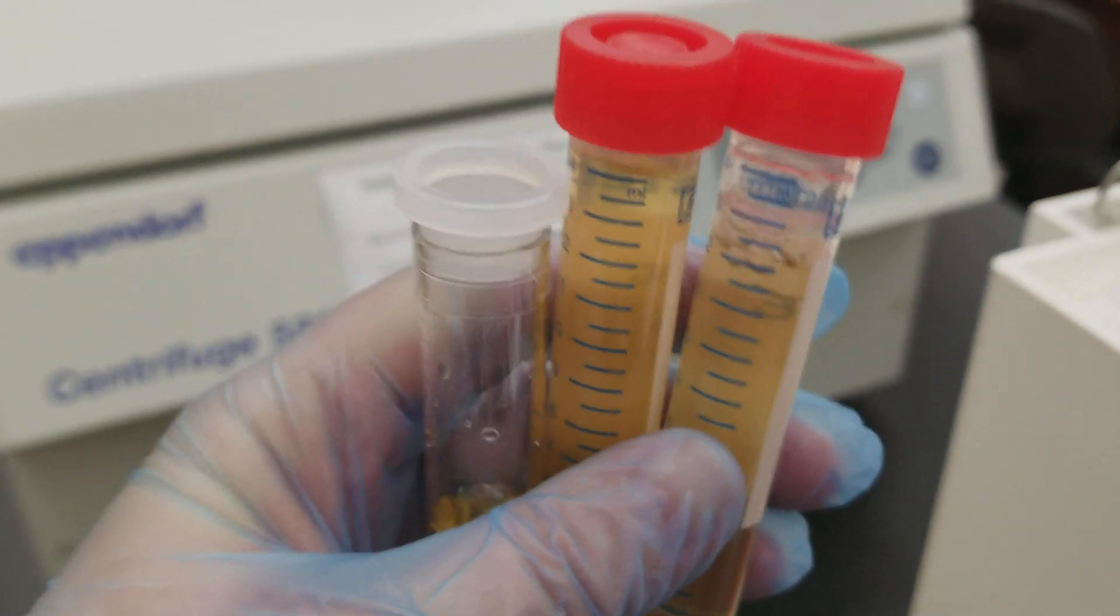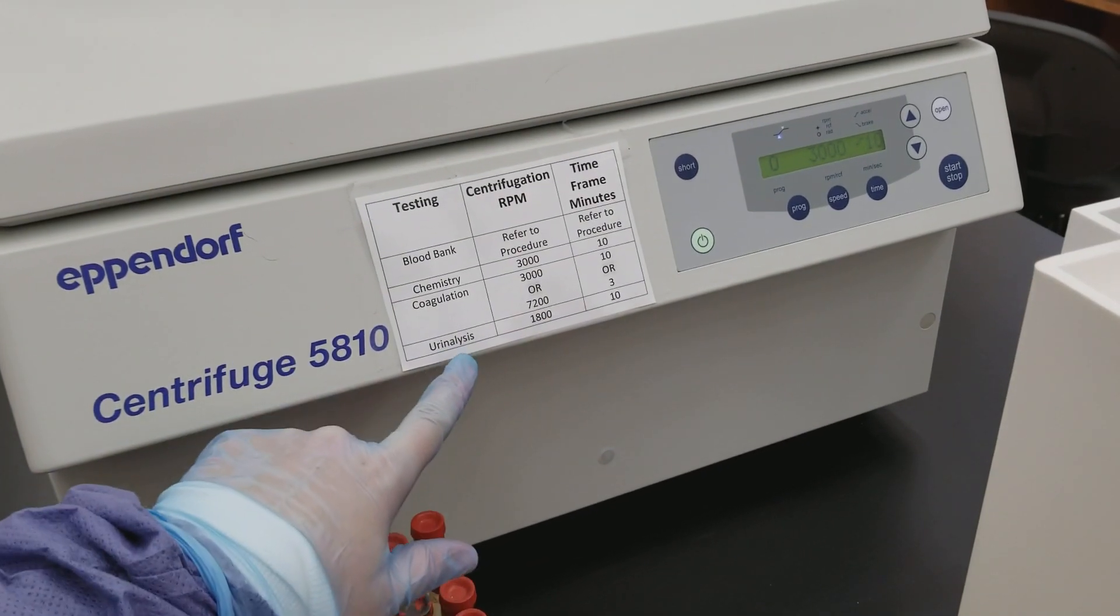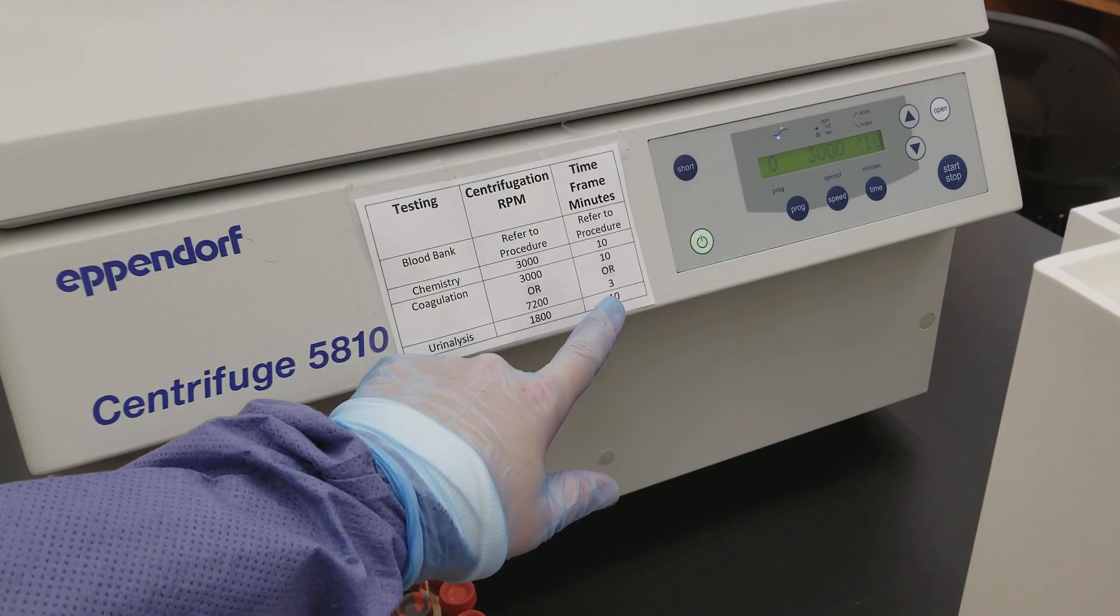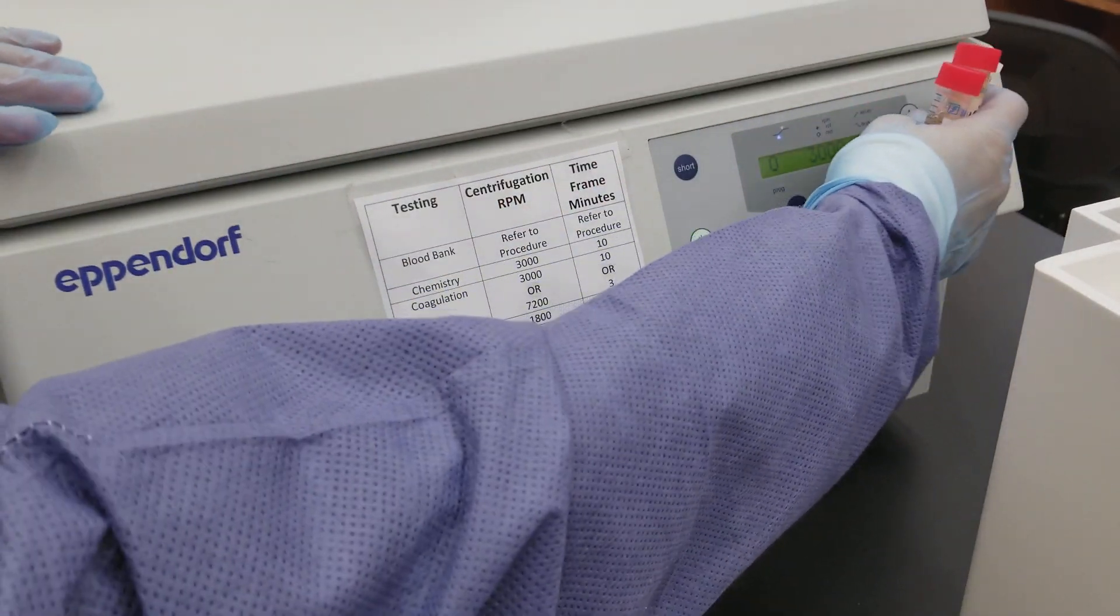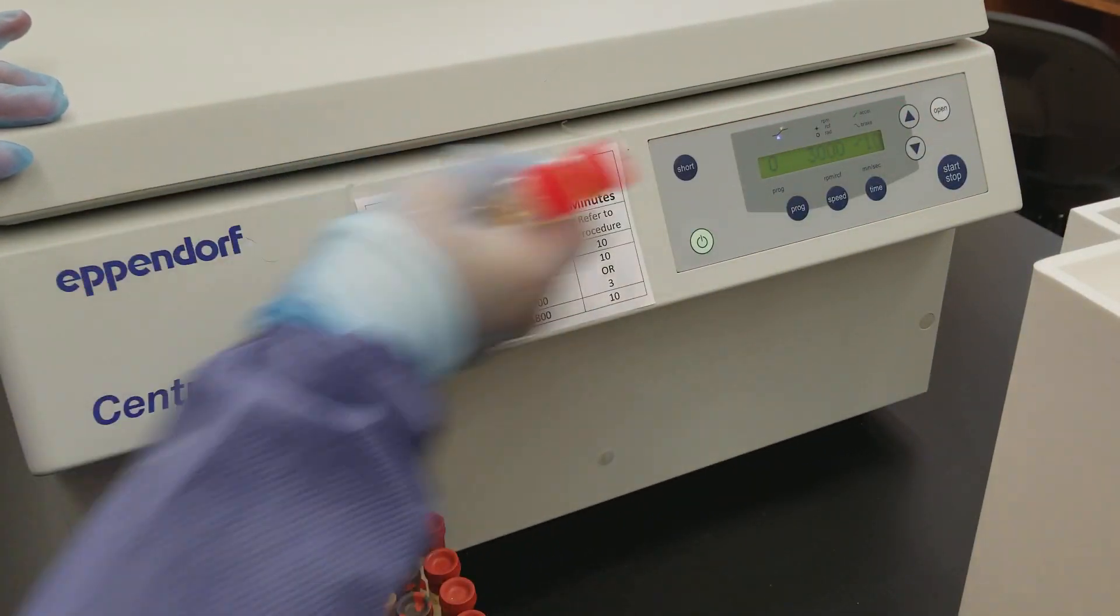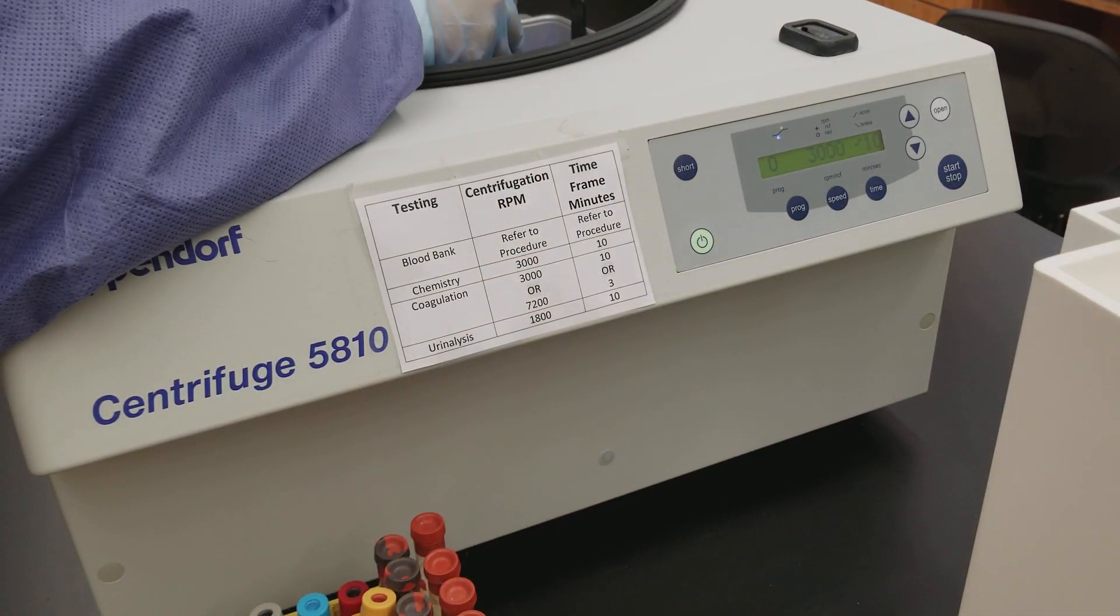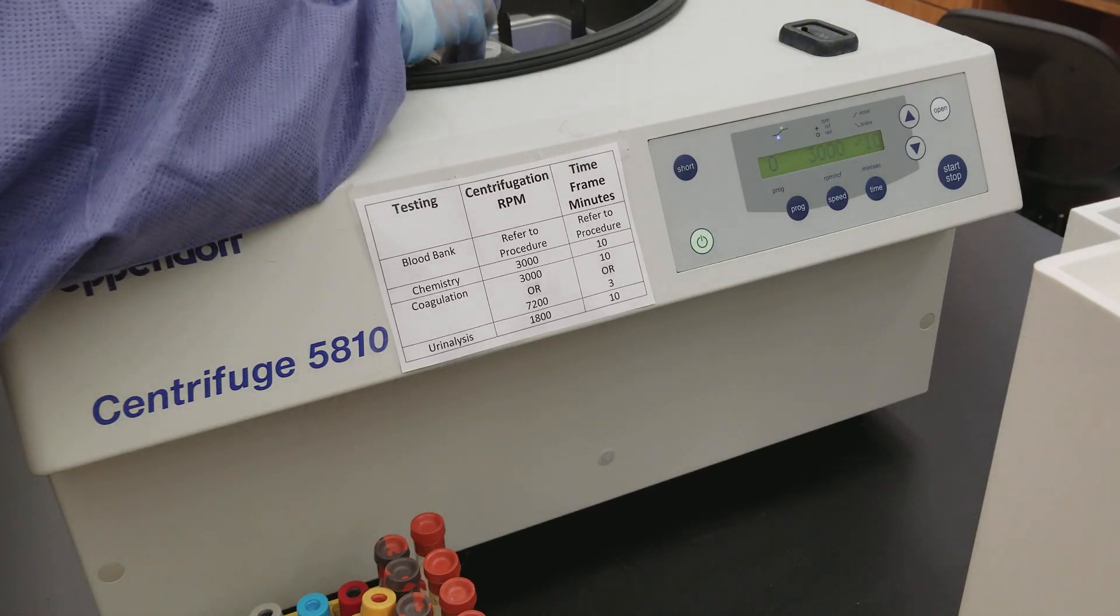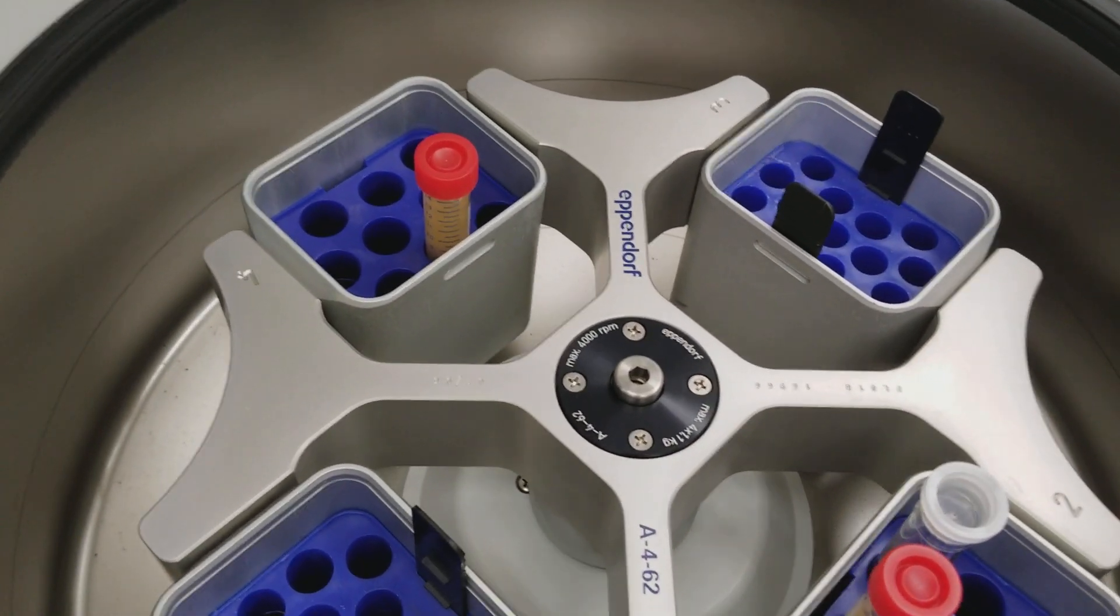But what we need to do is we need to make sure that our centrifuge is at the right setting. So here we have urinalysis is 1,800 for 10 minutes. So I'm putting them in first and then you want to balance the centrifuge, obviously. You want to put them into the buckets that are big, not the little ones for the blood tubes.